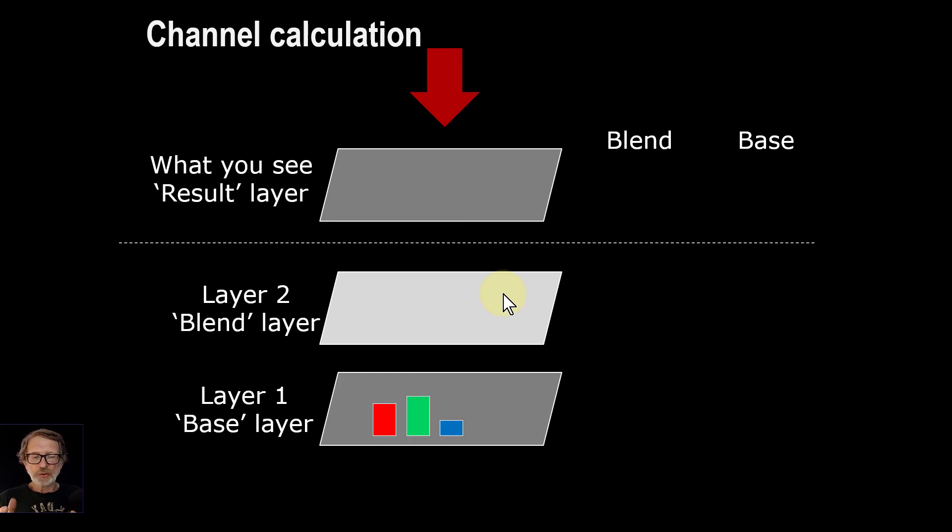If you start off here with the base layer, suppose you've got the red, green, and blue like this, and then the blend layer looks like this, it's a different color. This is one pixel each, by the way.